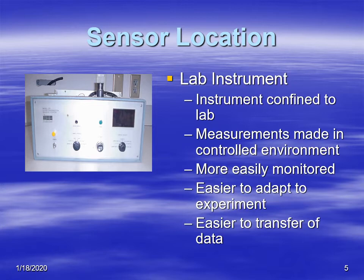Lab instruments are also more easily monitored — you can check on them more frequently to see if they're still working and within calibration. They're usually easier to adapt to experiments, meaning you can set them up to record data as you like. And since they're right there in the lab, it's much easier to transfer data compared to a field instrument.